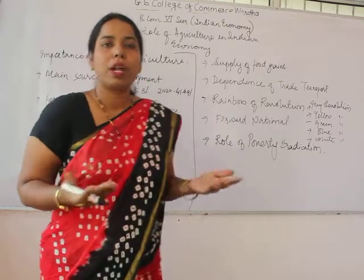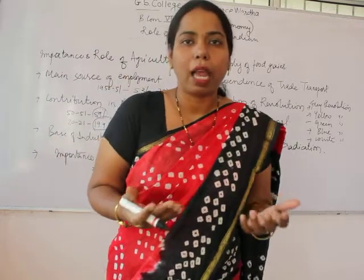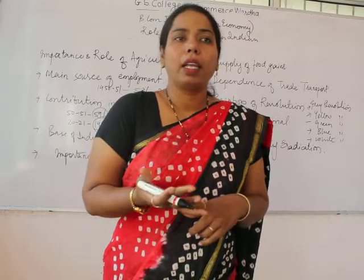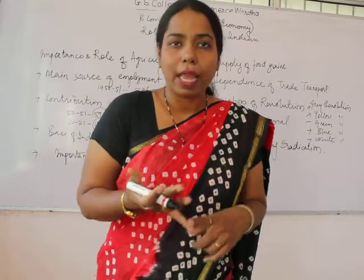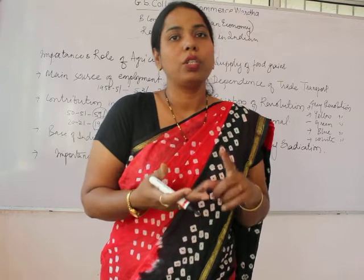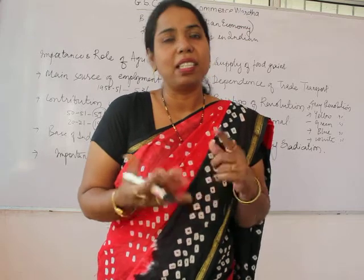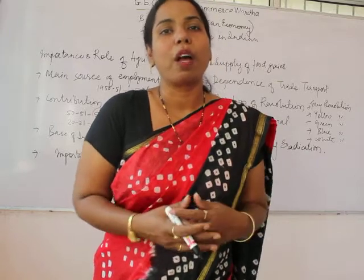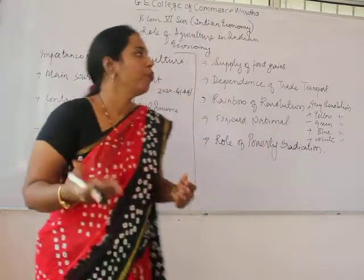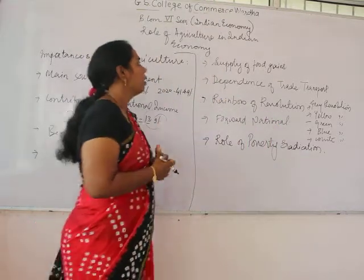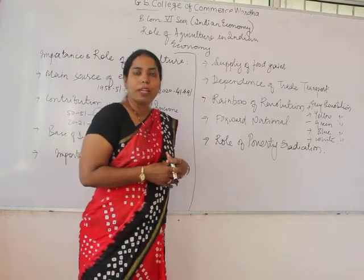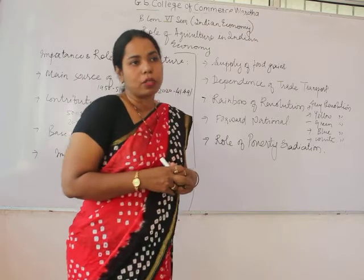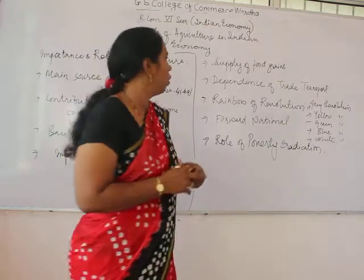Agriculture also provides the supply of food grains to the masses. Basically, rice, wheat, jowar, bajra, pulses, vegetables, and fruits — all of these come from our agriculture sector. So agriculture provides food items and foodstuffs to the masses at a large scale.